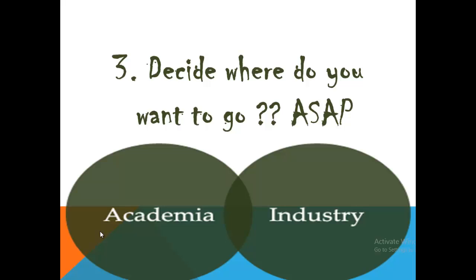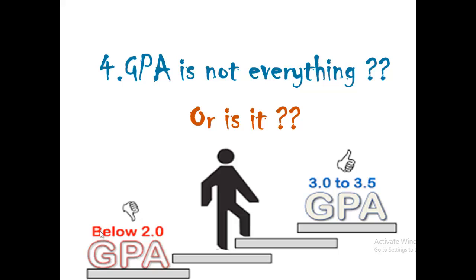If you choose academia, you will have to be very good at understanding the theoretical background of things, because you will become a teacher and will have to do research. If you are an industry person, you may escape a little bit of theoretical knowledge, but you will have to be very good at programming languages. So decide as soon as possible.